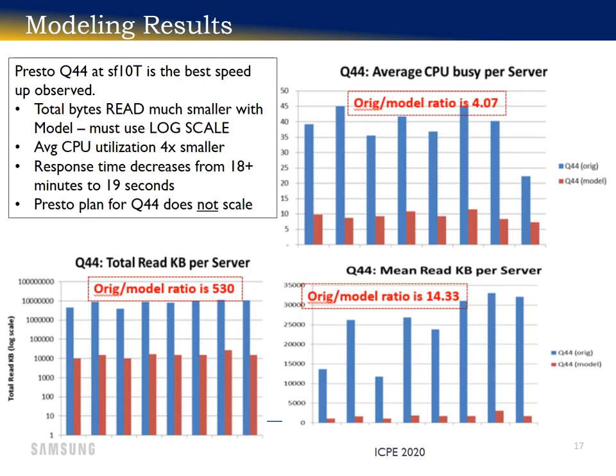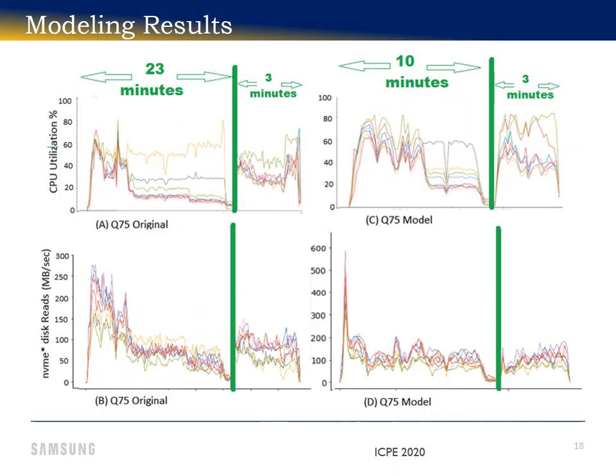Now let's look at some detailed performance data. Presto query 44 is the one with the most impressive speedup. Response time went from over 18 minutes to 19 seconds. The total bytes read by the model is three orders of magnitude smaller, while average CPU busy went from somewhere between 35 and 40% to around 10%.